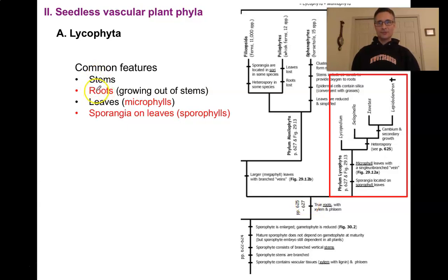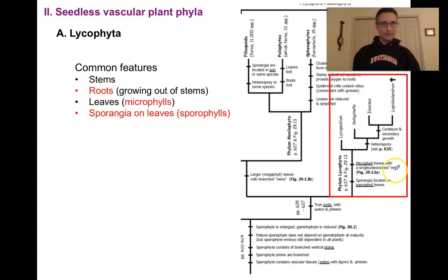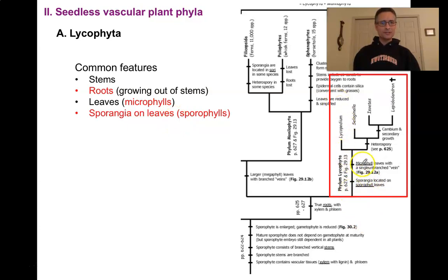In addition to true stems and true roots, we also see leaves for the first time — specifically microphylls, leaves with just a single vein. We're also going to have sporangia on leaves, giving us sporophylls. The evolution of microphylls and sporophylls are going to be seen on all of our lycophytes. Within this group there can be a lot of diversity, so let's look at a couple of genera.